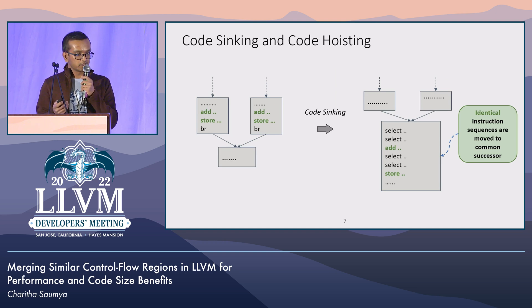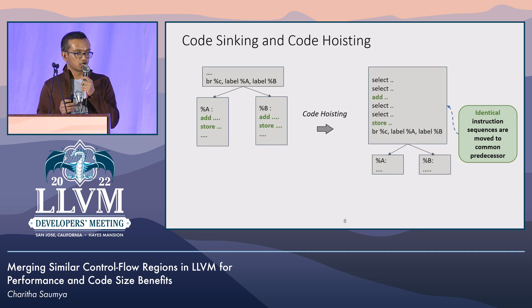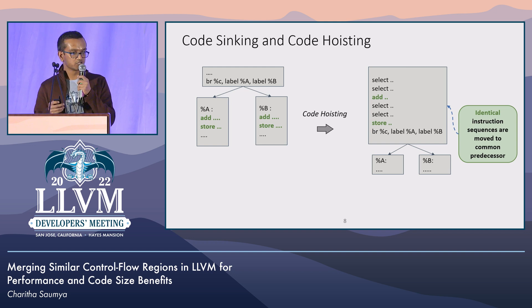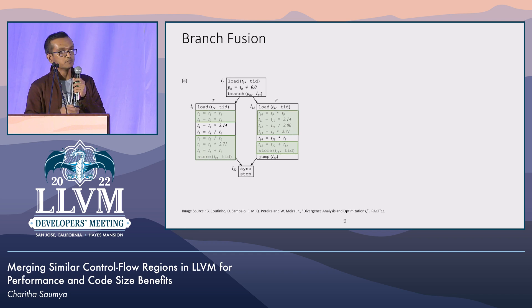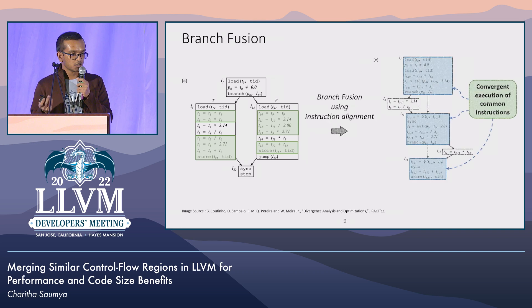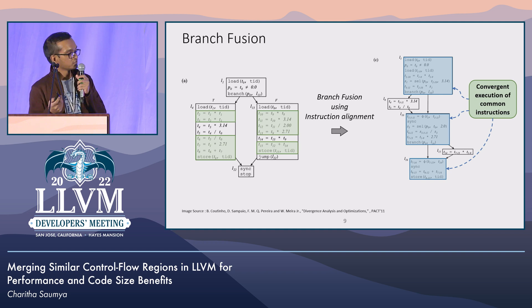Modern compiler pipelines have many transformations that exploit code similarity to improve performance or code size. One such example is code sinking — the idea is to move common instructions at the end of basic blocks into their common successor. Similarly, code hoisting applies when you have common instructions at the beginning of basic blocks; you can move those instructions into the common predecessor with the help of select instructions. Now, what if common instructions are scattered throughout the basic blocks? Branch fusion was proposed to exploit this: you take the instruction sequences of two basic blocks, align them to find similarity, and move them to convergent basic blocks to reduce code size or improve GPU performance.